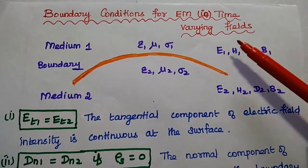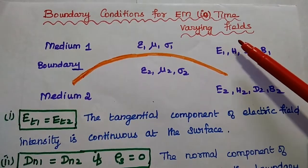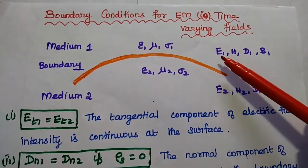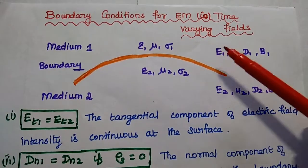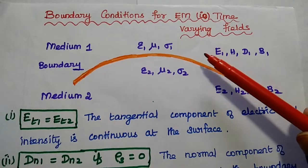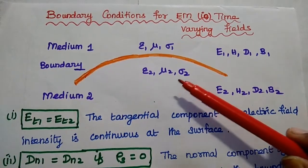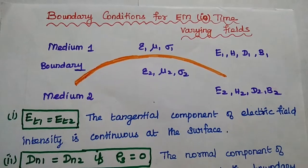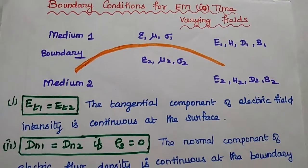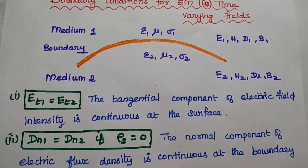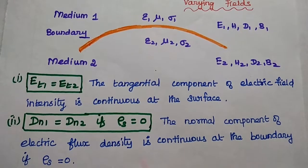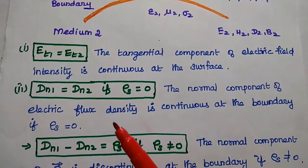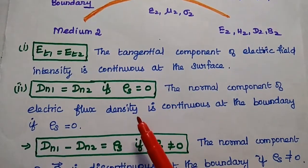We are going to discuss the boundary conditions for electromagnetic fields, that is time-varying fields. We consider two different media with parameters epsilon 1, mu 1, and sigma 1 for medium 1, and epsilon 2, mu 2, and sigma 2 for medium 2. We have already discussed the boundary conditions for static electric and static magnetic fields separately. For time-varying electromagnetic fields, we simply combine both boundary conditions for electric field and magnetic field.